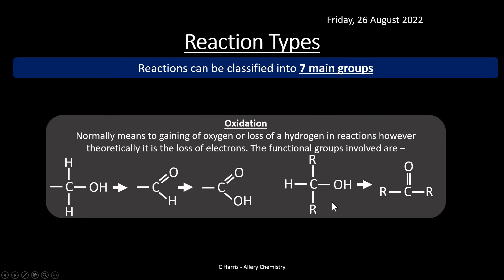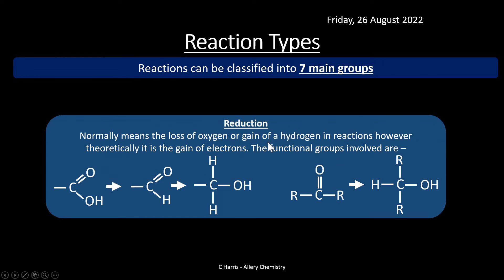Oxidation involves reacting a molecule with an oxidising agent to form a different product. Classic examples are: primary alcohol to aldehyde to carboxylic acid, or secondary alcohol to ketone. Reduction is going backwards: carboxylic acid to aldehyde to primary alcohol, and ketone to secondary alcohol. Those are your main types of reactions.